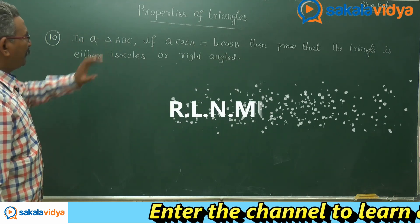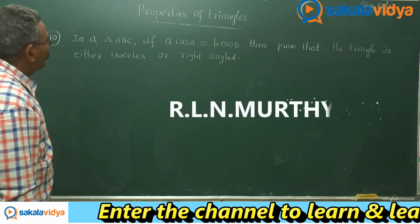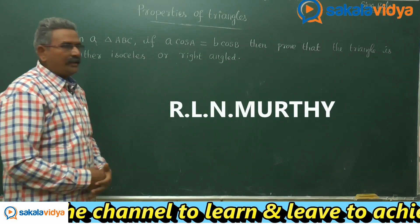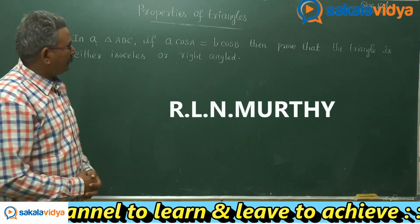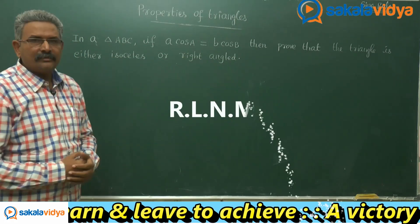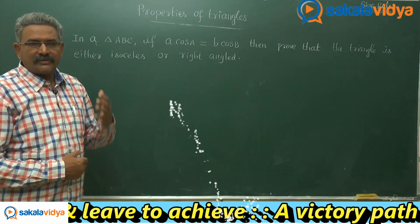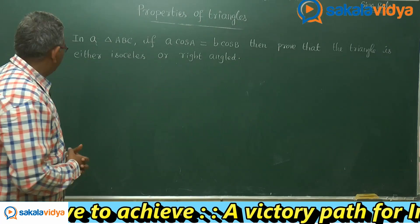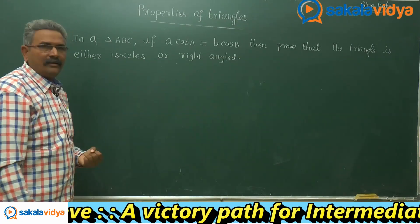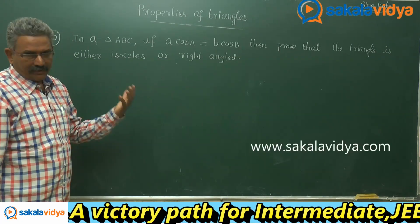In a triangle ABC, if A·cosA equals B·cosB, then prove that the triangle is either isosceles or a right-angle triangle.